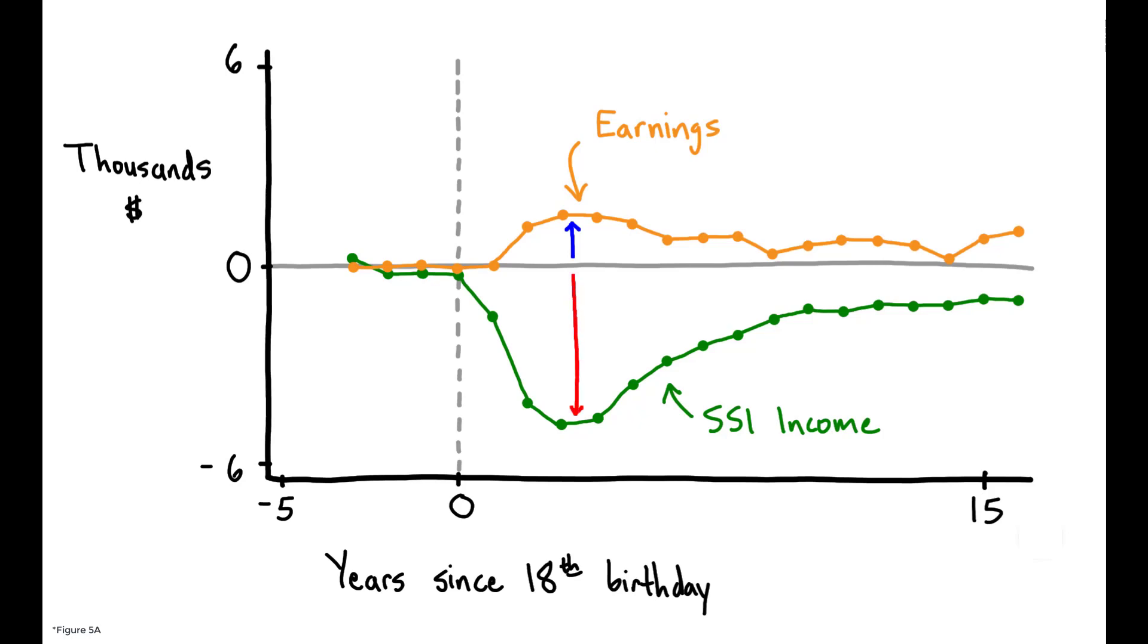On average, individuals who are removed from the program are able to recover just one-third of their lost SSI income. On net, and after aggregating with all other observable income, total income falls substantially as a result of being removed from the program.